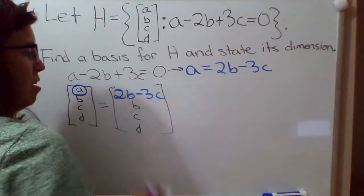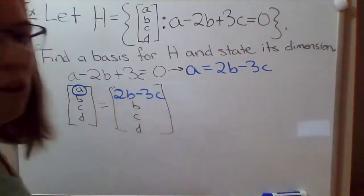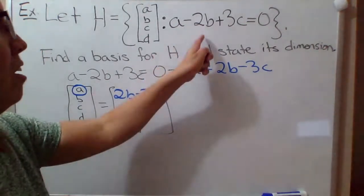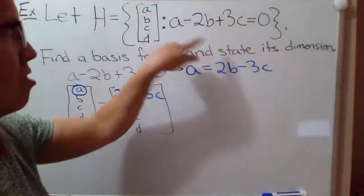So we can think of it as B, C, and D are the free variables. I mean, we could even take this as a system of equations.